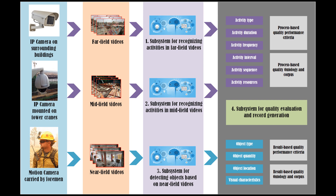PI treats the estimation from two perspectives: processes and results. Process-based quality control detects if construction operations follow their method statements. It will check activity types, durations, frequencies, intervals, and sequences.